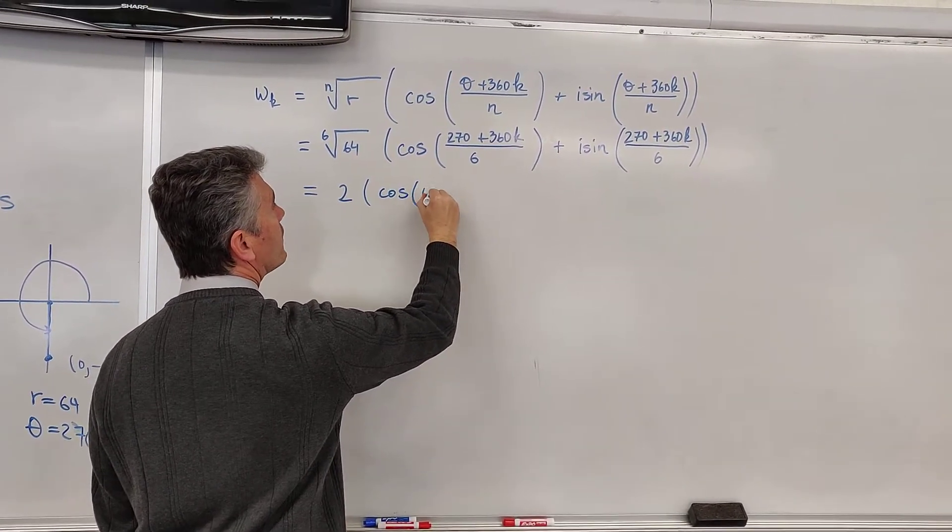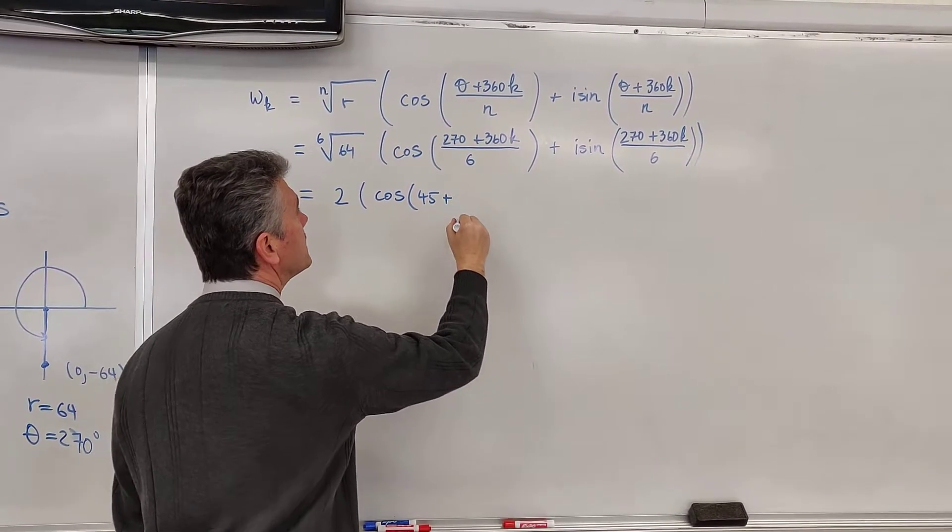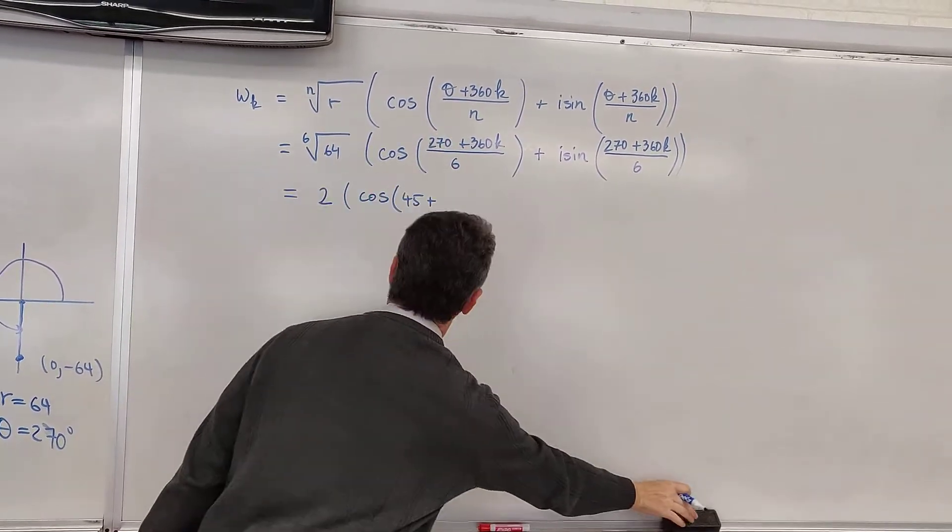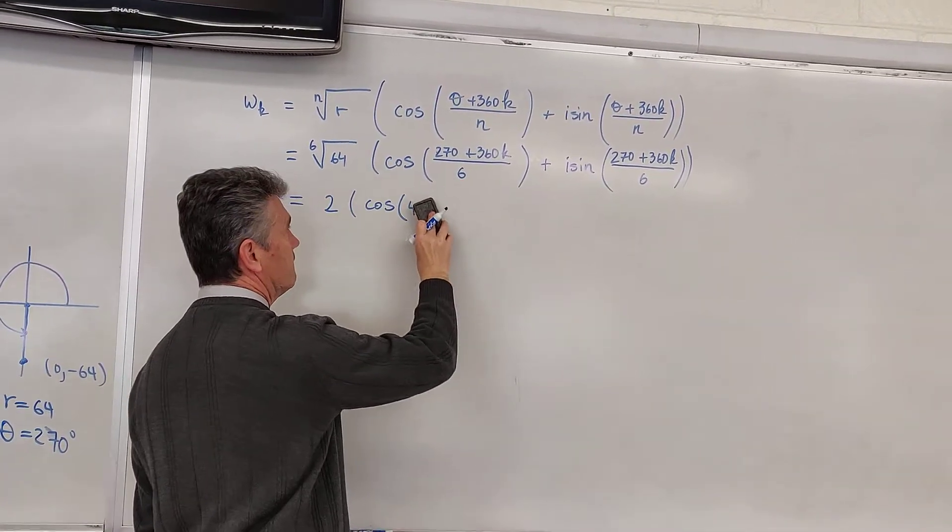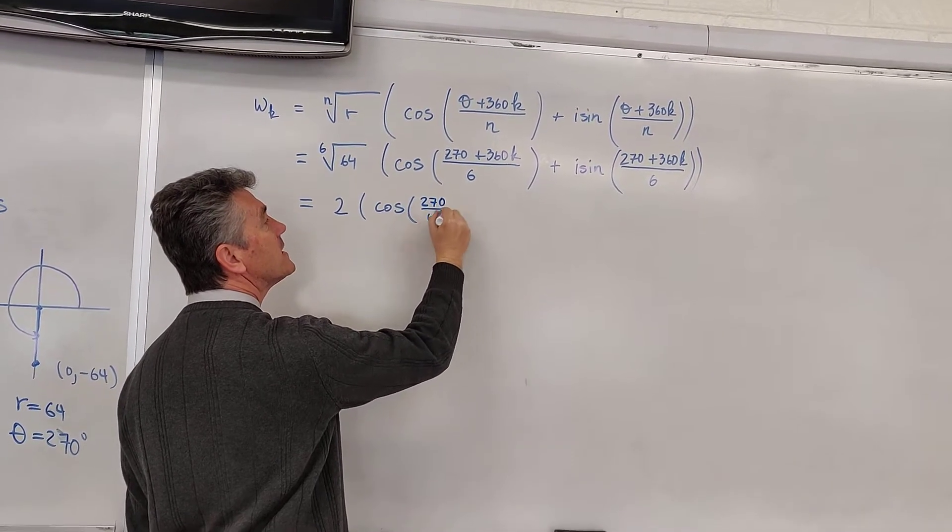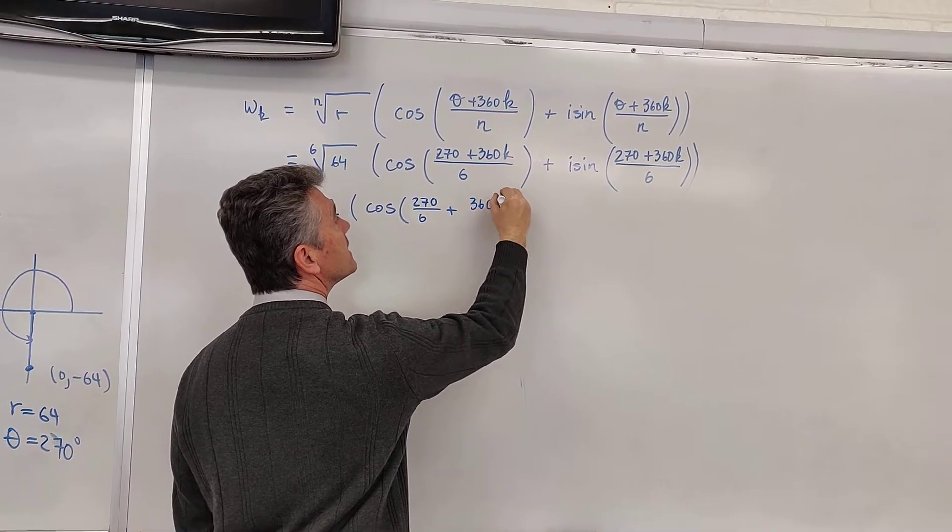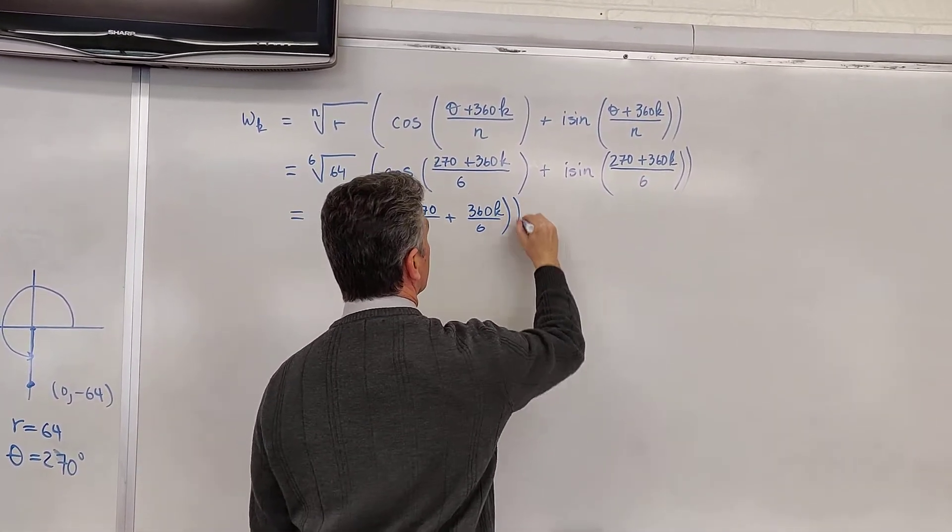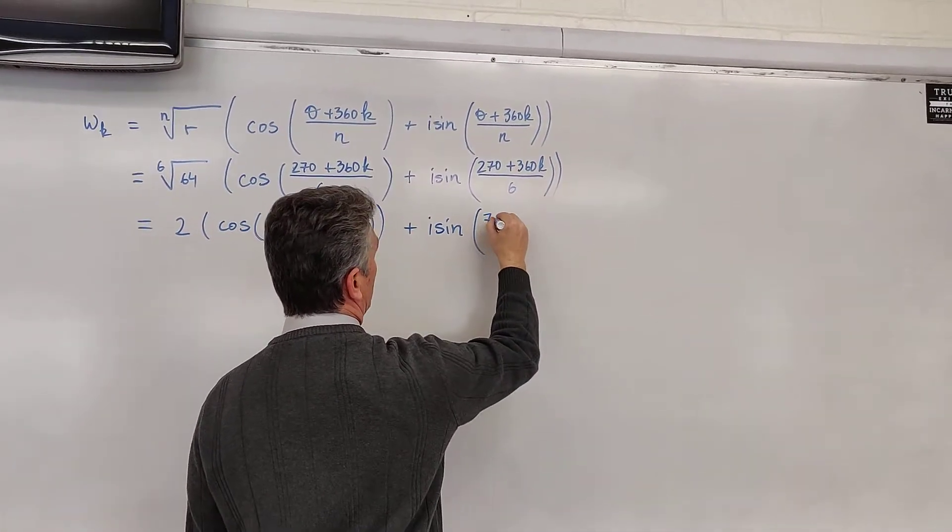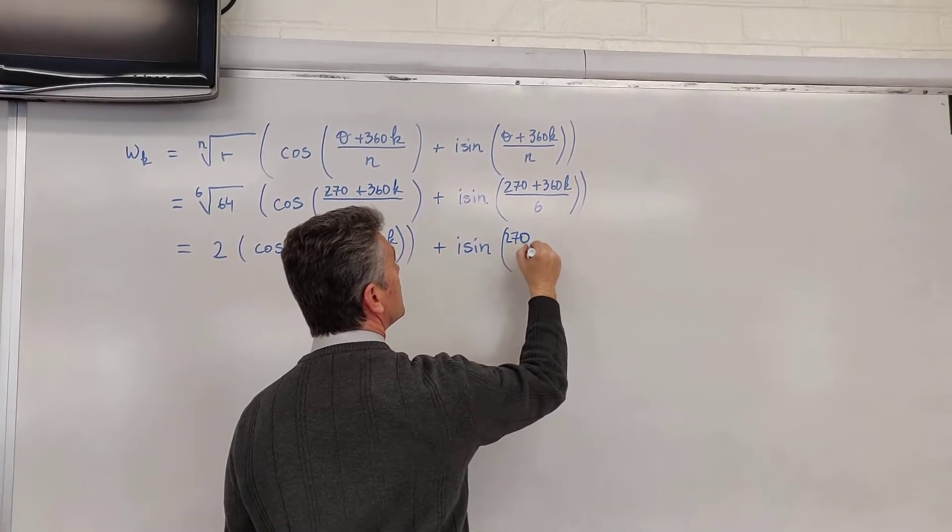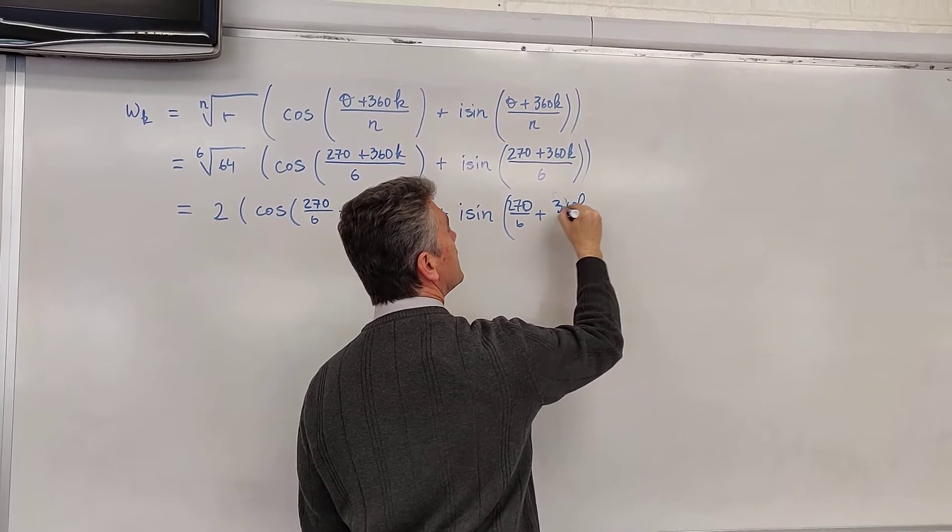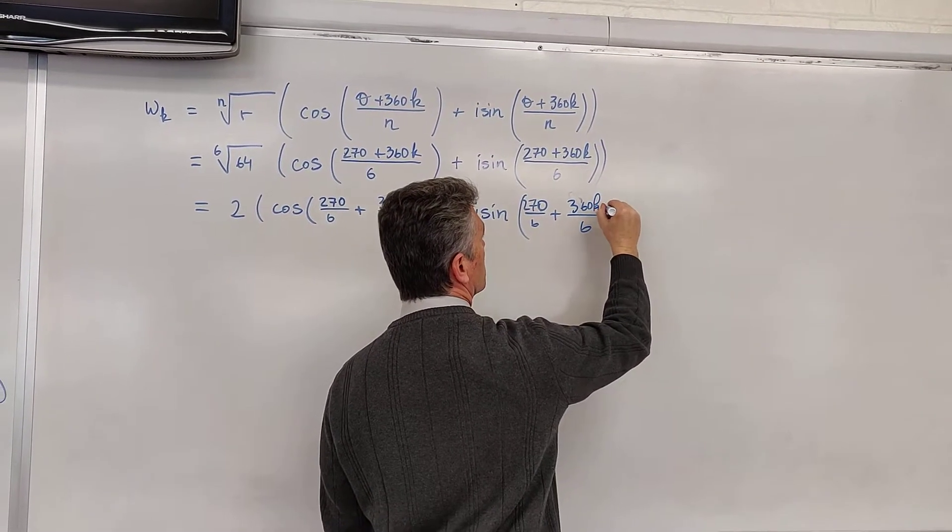Cosine of 45 plus... How did I get 45? Well, let me show my work. Cosine of 270 divided by 6 plus 360k divided by 6 plus i sine 270 divided by 6 plus 360k divided by 6.